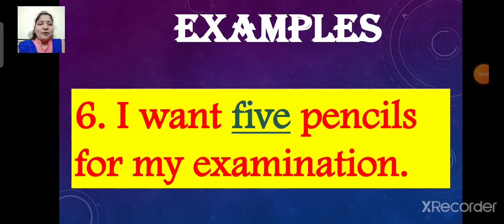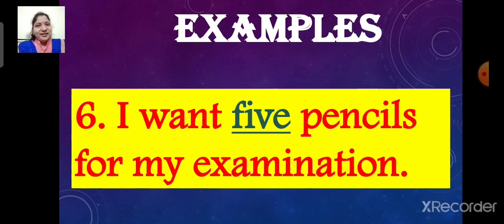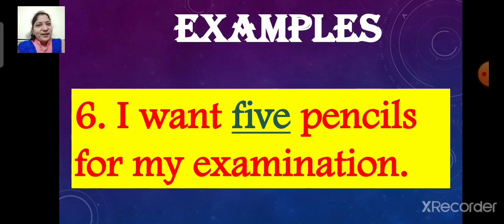I want five pencils for my examination. Here, the underlined word is five. So the word five is an adjective. It describes the noun pencils. The word five gives information about the number of pencils. So the word five is an adjective of number.